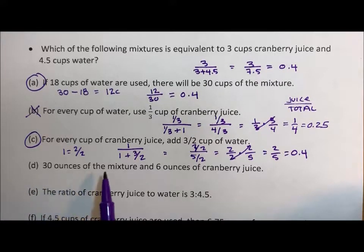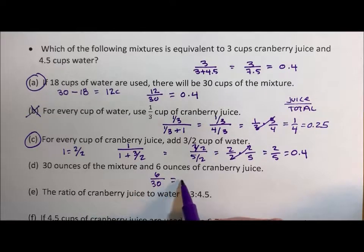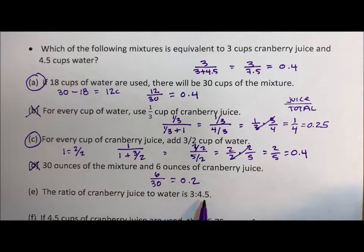30 ounces of the mixture to 6 ounces of cranberry juice, so 6 over 30. Well 6 over 30 is 0.2, so that doesn't work.